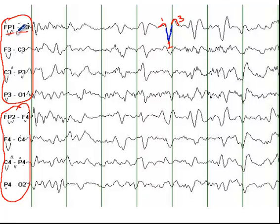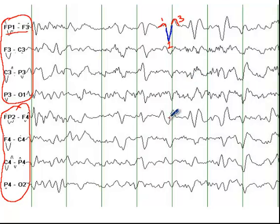You see a number of those triphasic waves here, both in the left hemisphere — FP1, FP3 — and in the right hemisphere — FP2 and FP4. As you note, the highest amplitudes are in the frontal region, and these extend all the way back to the occipital lobe.